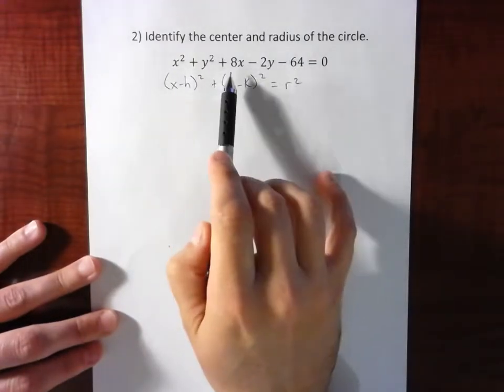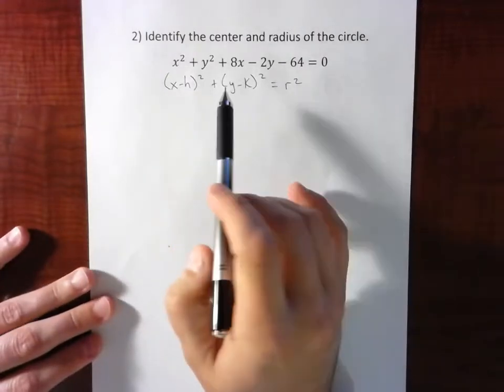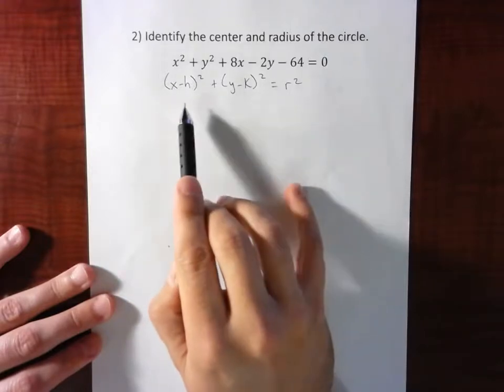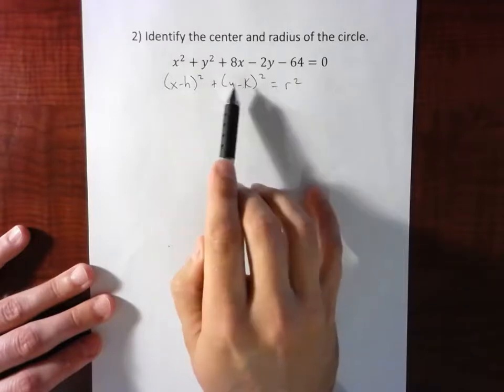So I can't just look at that normally and know what is the center, what is the radius. So we want to change it to standard form, which I've written here to remind us what that looks like. Much more useful because we've got that h,k built right in.